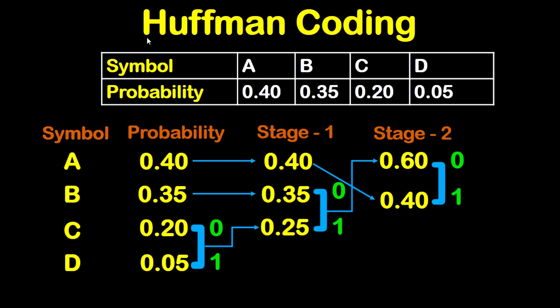In this tutorial we are going to show a solved example on Huffman coding. We have four symbols A, B, C, D and we have the probability of each symbol. What we are going to do is get the code for each symbol A, B, C, D.